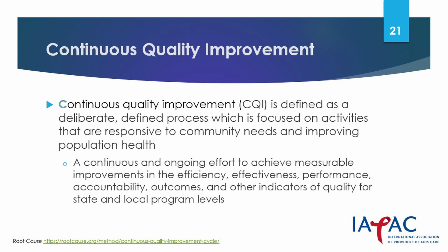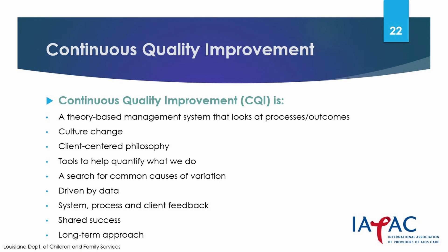Quality improvement is a systematic, data-guided set of activities designed to bring about immediate improvement in healthcare delivery in particular settings. Further, continuous quality improvement is a theory-based management system that looks at processes and outcomes. It assesses cultural change. It has a client-centered philosophy. It uses tools to help quantify what we do. It searches for common causes of variation, is driven by data, and has system process and client feedback.